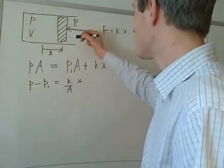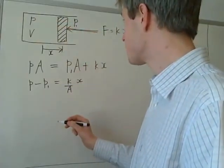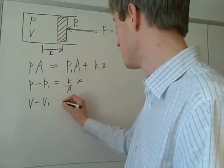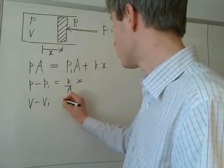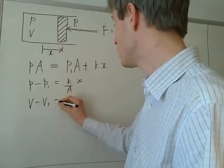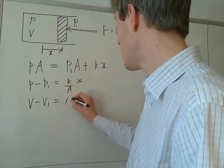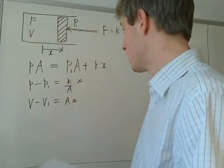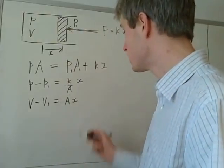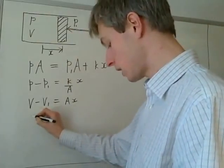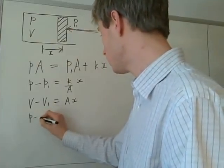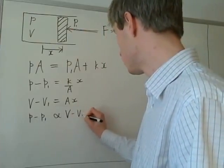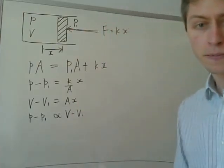Similarly, we can say that the volume, or the increase in volume from its initial value, V minus V1, is proportional, or is equal to A times x. And so therefore, both of these quantities are proportional to x. And we can say that P minus P1 is proportional to V minus V1, which is what we've been asked to do.